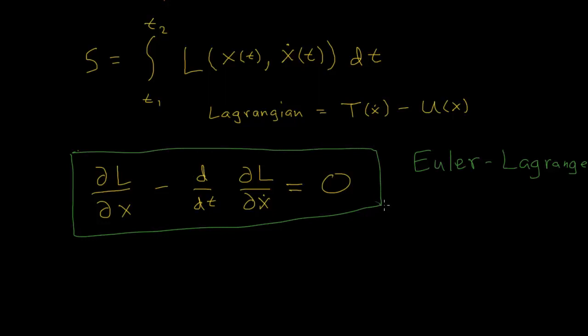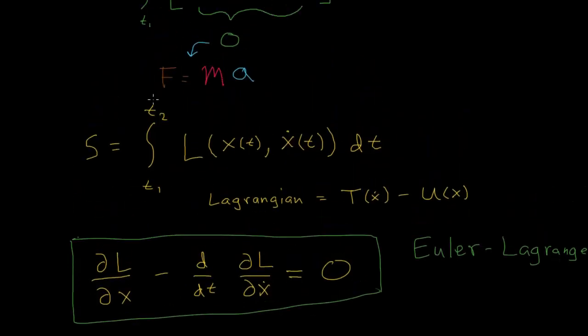So if we put in our specific forms of L equals the difference between our kinetic energy and our potential energy, and we used 1/2 m v² and U(x) for the potential, we would end up getting back F = ma, Newton's second law.